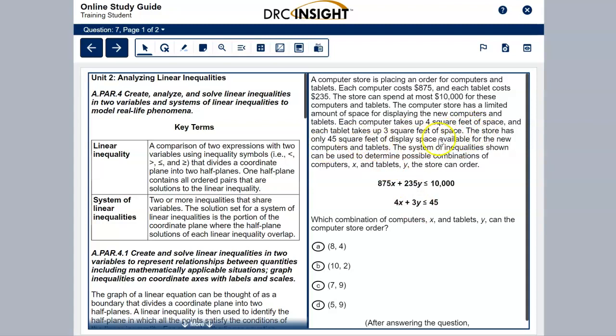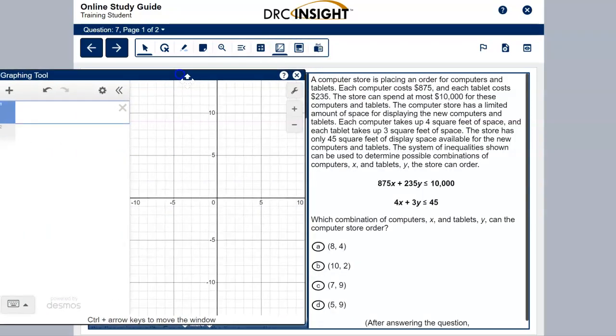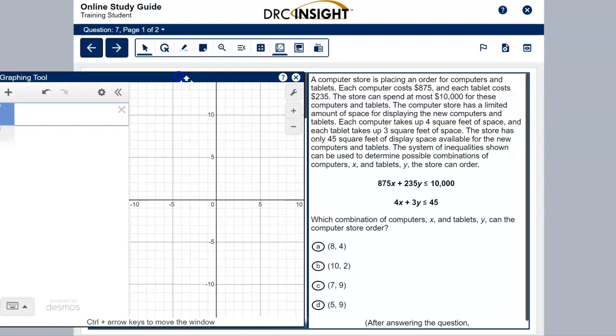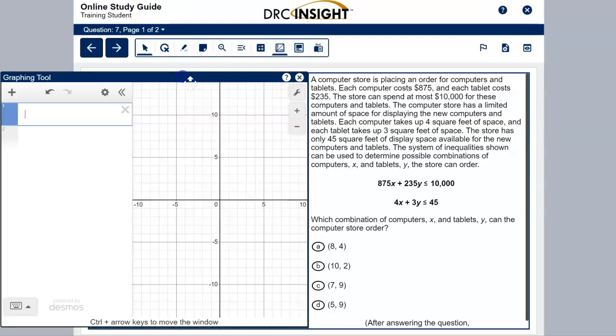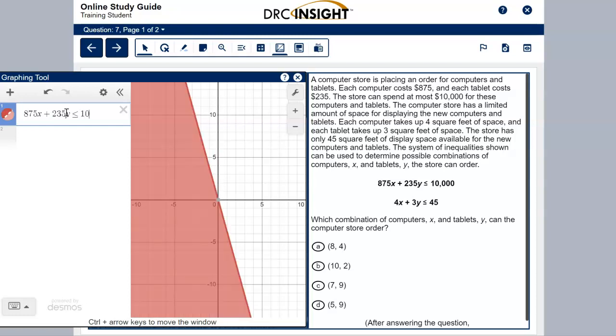I'm assuming these two inequalities have something to do with that. So let's see if this is true. The store has only 45 square feet of display. The system of inequality shown can be used to determine. Okay, so I definitely just need to use this system. I don't need to read every bit of that text to do it. So let's start by opening our graphing tool. I'm going to move it to the left. We aren't able to resize our graphing calculator, so we need to try to keep it open while we're working without resizing.